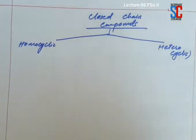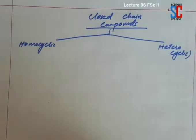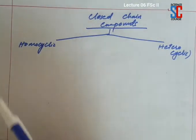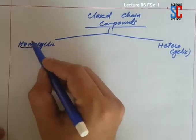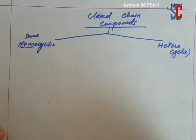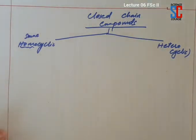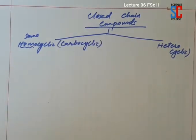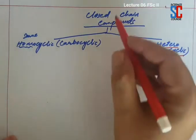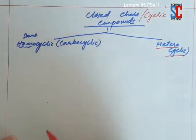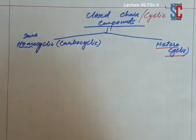Organic compounds ki 2 major types: number 1 open chain and number 2 closed chain. Closed chain are classified into 2 types: homocyclic and heterocyclic. Homo means same — when the link consists of the same atoms. As we are discussing organic compounds, we can say that link consists of only carbon atoms; they are called homocyclic and also called carbocyclic. When the link consists of atoms of different elements, then they are called heterocyclic compounds.